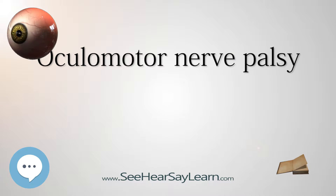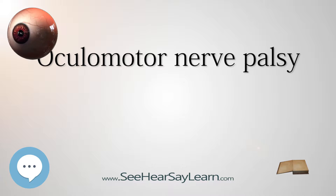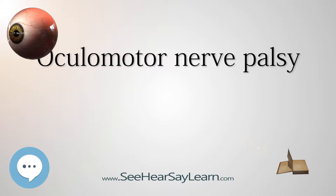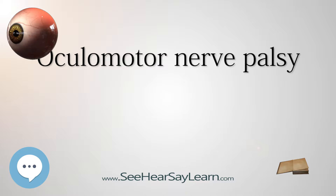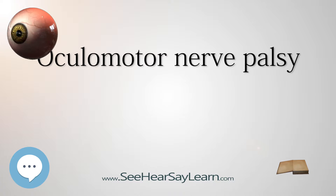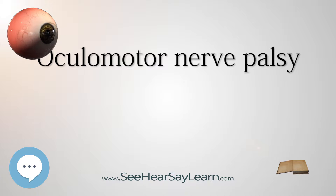Oculomotor nerve palsy, or third nerve palsy, is an eye condition resulting from damage to the third cranial nerve or a branch thereof. The oculomotor nerve supplies the majority of the muscles controlling eye movements, so damage to this nerve results in the affected individual being unable to move the eye normally. The nerve also supplies the upper eyelid muscle (levator palpebrae superioris) and the muscles responsible for pupil constriction (sphincter pupillae). The limitations of eye movements are generally so severe that the affected individual is unable to maintain normal alignment when looking straight ahead, leading to strabismus and, as a consequence, double vision (diplopia). It is also known as oculomotor neuropathy.